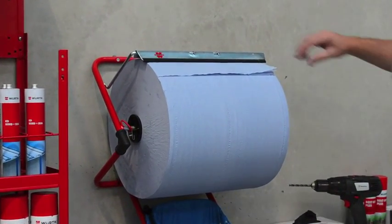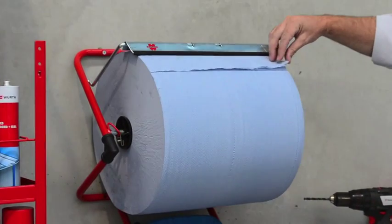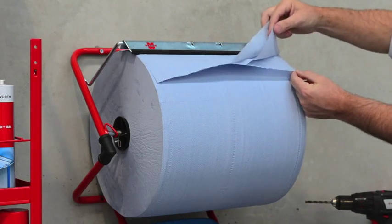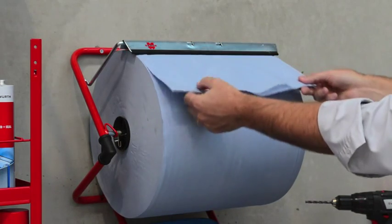This blue high-quality paper towel offers a strong three-ply structure, perfect for even the toughest applications. The roll is perforated for easy sheet tear-off.